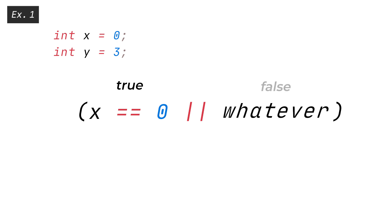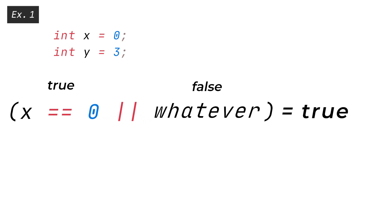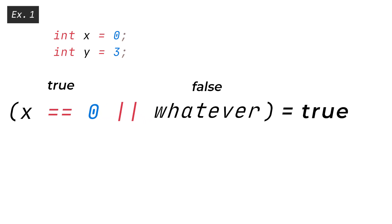Even if WHATEVER is false, the whole condition will still return true. We can generalize this behavior to say that when dealing with the OR-OR operator, TRUE OR-ANYTHING will always be true, and thus the right-hand side operand is not evaluated.